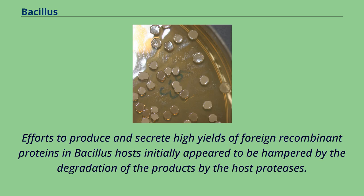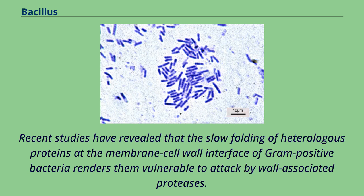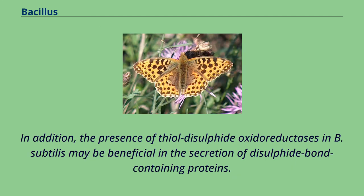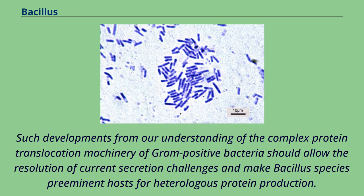Efforts to produce and secrete high yields of foreign recombinant proteins in Bacillus hosts initially appeared to be hampered by the degradation of the products by the host proteases. Recent studies have revealed that the slow folding of heterologous proteins at the membrane-cell wall interface of gram-positive bacteria renders them vulnerable to attack by wall-associated proteases. The presence of thiol-disulfide oxidoreductases in B. subtilis may be beneficial in the secretion of disulfide bond-containing proteins.